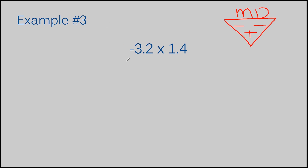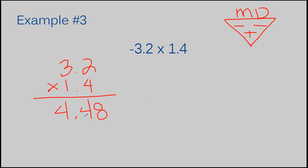Now I'm going to ignore the sign for a minute and just multiply my numbers following the regular rules for multiplication. I stack up 3 and 2 tenths times 1 and 4 tenths. When I finish multiplying, I get 4 and 48 hundredths. But like I said, I know my answer is going to be negative, so I put that in front. My answer to example number three is negative 4 and 48 hundredths.